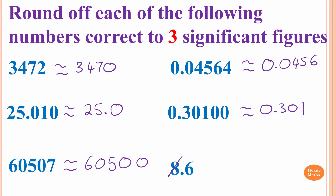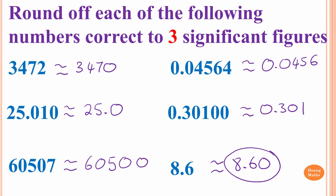8.6: at the moment we only have 2 significant figures, but we want 3 significant figures. Remember, zeros at the end of a decimal number are significant, so we add a zero at the back. 8.60 is exactly the same value as 8.6, but 8.6 is 2 significant figures whereas 8.60 is 3 significant figures — that's what we want.